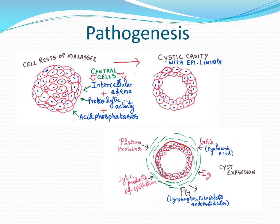Water enters the lumen until the osmotic pressure inside and outside the epithelium is equalized, thereby expanding the cyst. As the cyst expands within the bone, it needs space. Prostaglandins — secreted by lymphocytes, fibroblasts, and endothelial cells — resorb bone to create space for the expanding cyst. So the cyst expands initially through central necrosis, then through osmotic pressure, with bone resorption facilitated by prostaglandins.